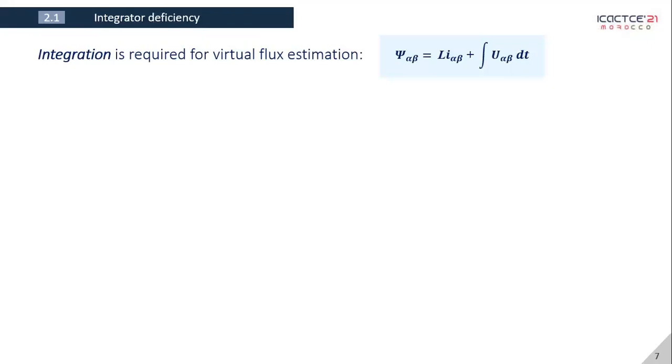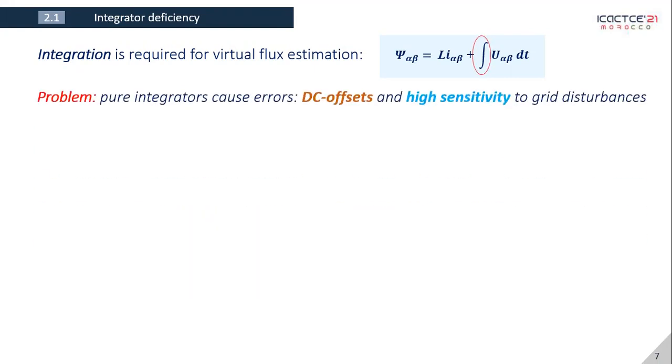The problem with this estimation is the need to implement pure integrators. The problem with pure integrators is that they can cause DC offsets and they're also known to be very sensitive to grid disturbances.